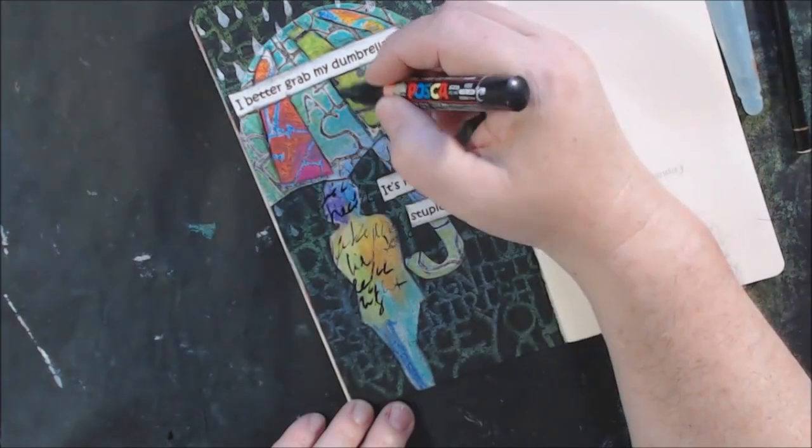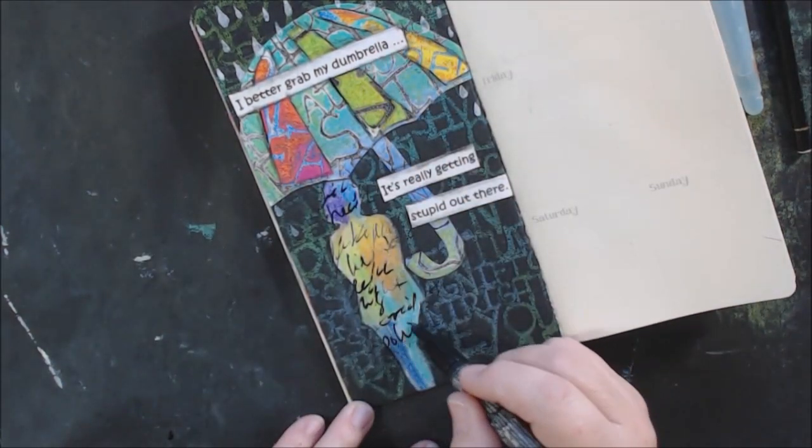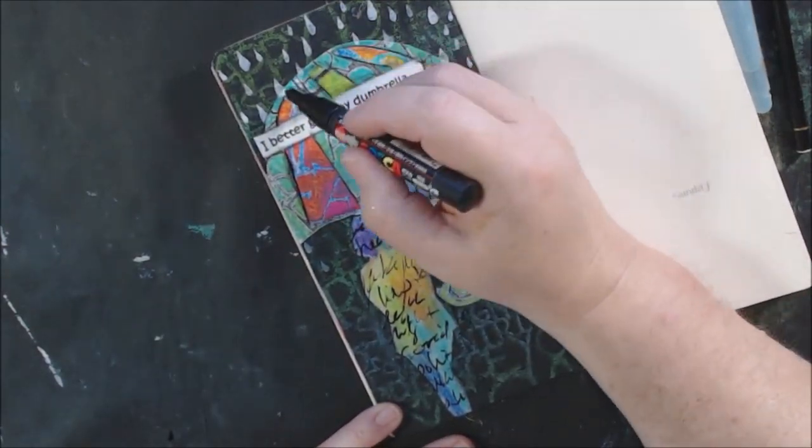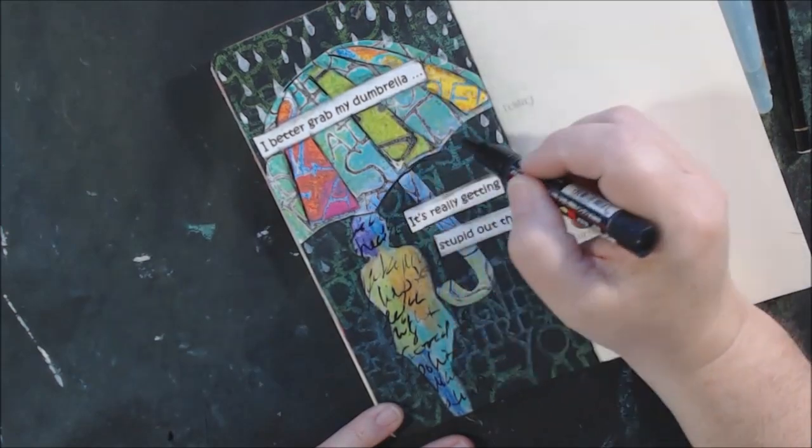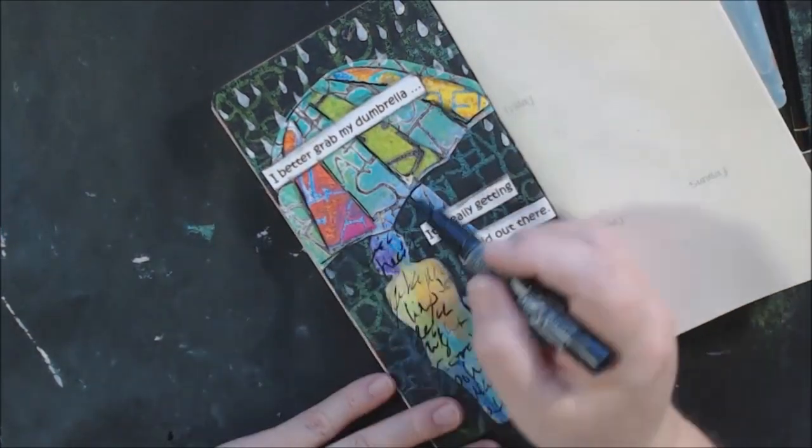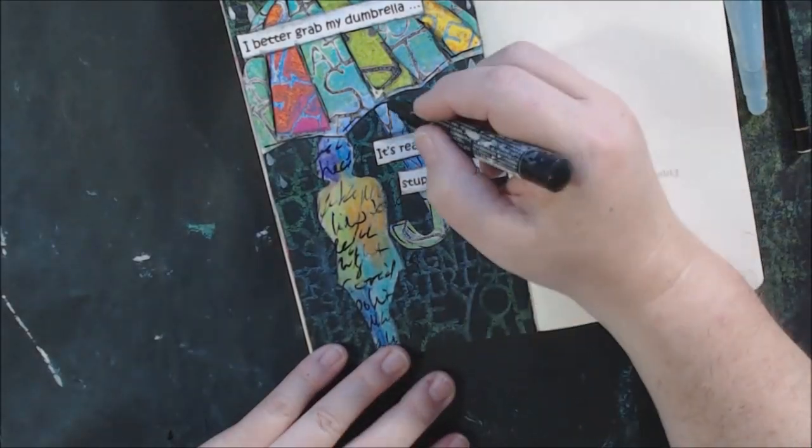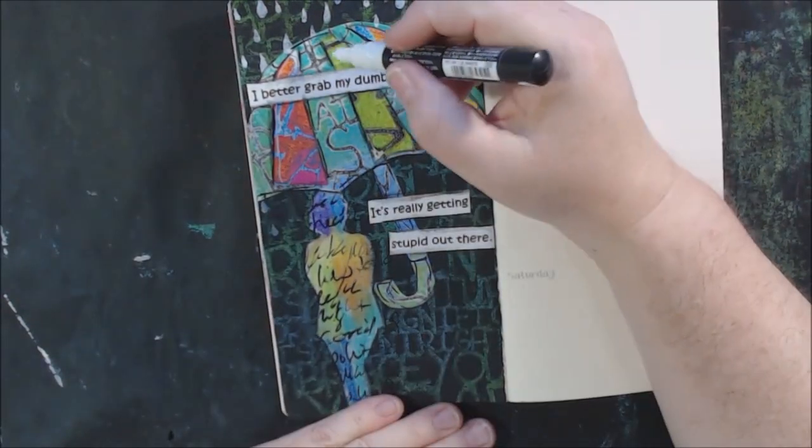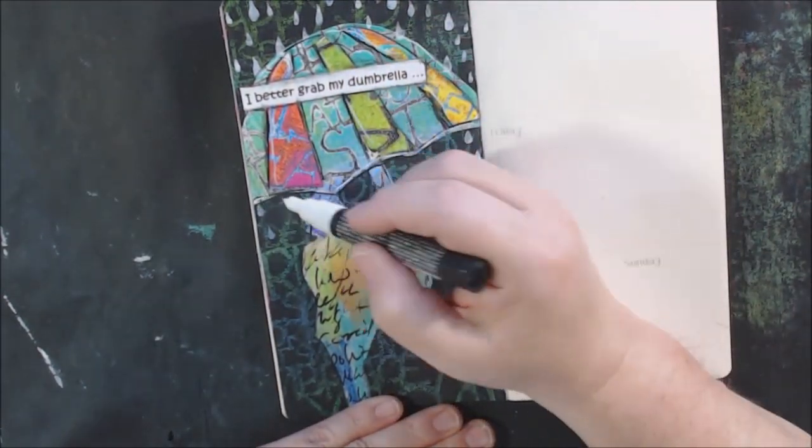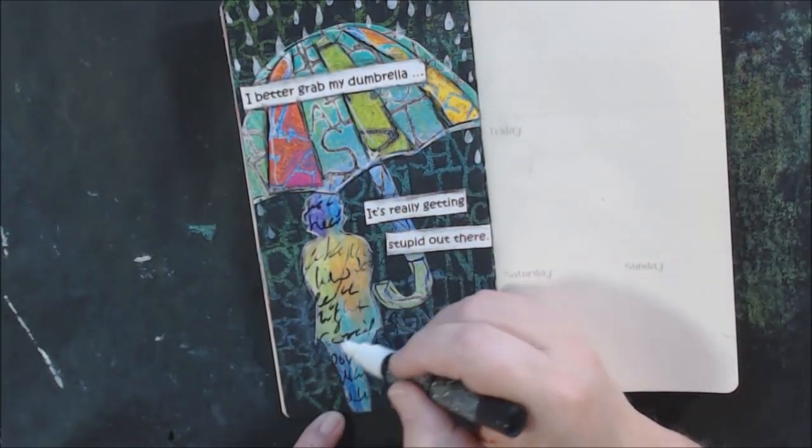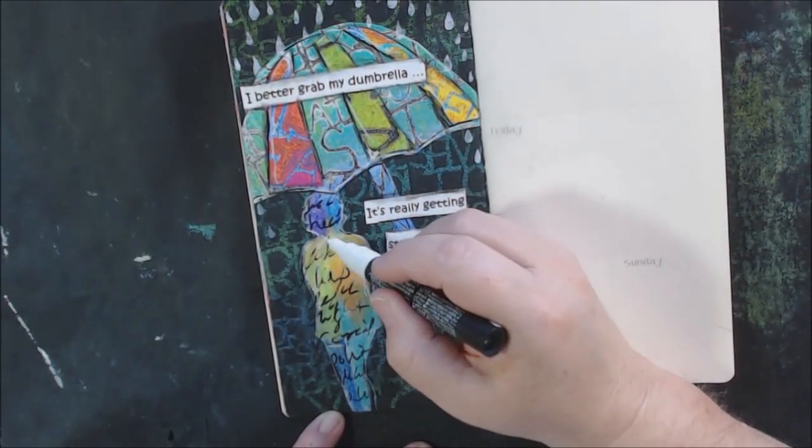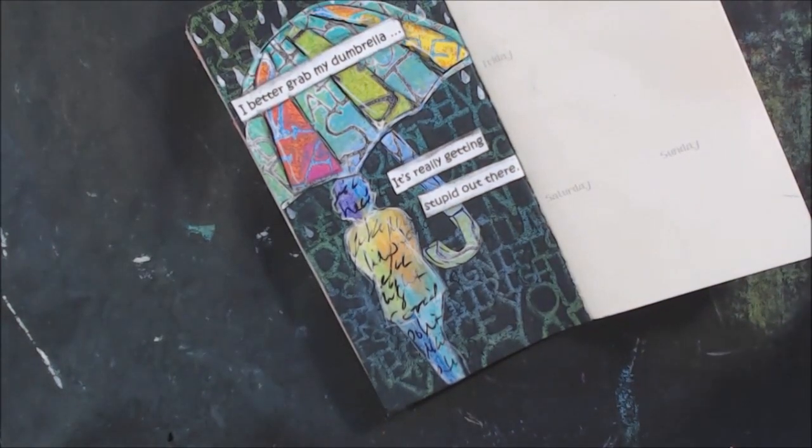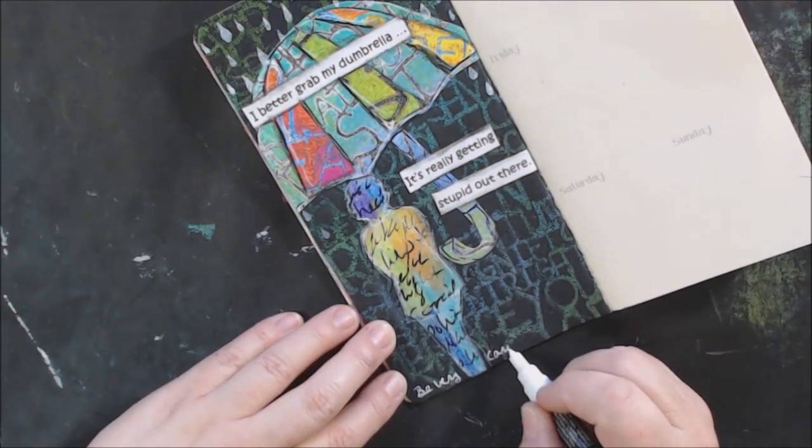And then what did I do after that? Oh I decided to do my scribble writing. So I'm just writing things about fake news and political stuff and lies and truth and just all the stuff that annoys me about news, all the speculation of what's true and what's not true and the motivations behind things. It's just too much. So you can't read what it says, it just adds graphic interest to the figure. Then I got out my white Posca pen and just added some sketchy lines around here and there.